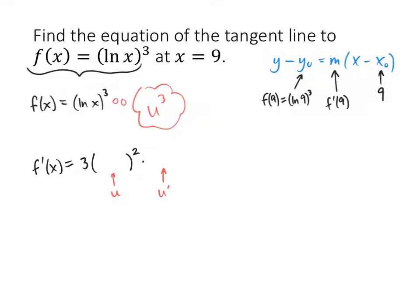So inside the parentheses, I write the original u, which is the natural log of x, and then after I take that derivative of the outside function, I multiply by the derivative of the inside function, and the derivative of the natural log of x is 1 over x. So that's the formula for my f prime. That's the formula for my derivative.